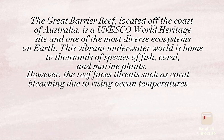Paragraph three. The Great Barrier Reef, located off the coast of Australia, is a UNESCO World Heritage Site and one of the most diverse ecosystems on Earth. This vibrant underwater world is home to thousands of species of fish, coral, and marine plants. However, the reef faces threats such as coral bleaching due to rising ocean temperatures.